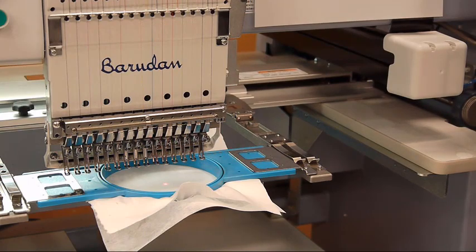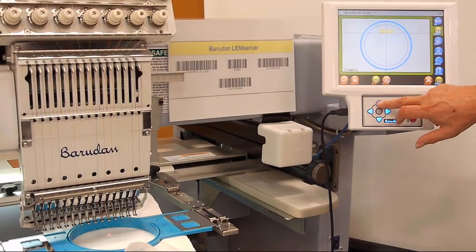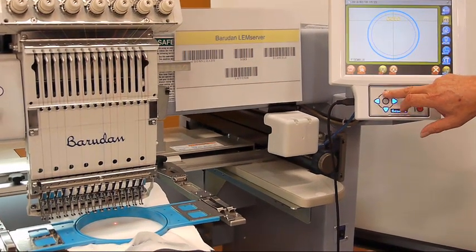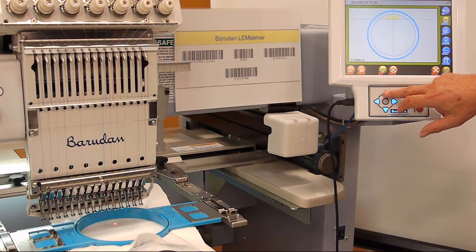Now in this case I'm actually wanting to run the design a little bit towards the outside of this hoop, so I'm going to move it up. As long as the hoop stays blue, I know I'm within the safety margin.